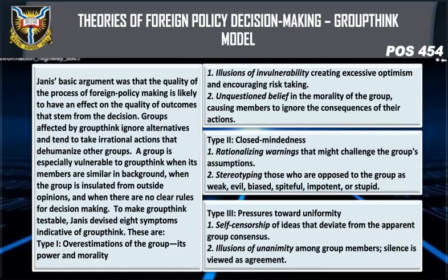Groups tend to take irrational actions that dehumanize other groups. A group is especially vulnerable to groupthink when its members are similar in background, when the group is insulated from outside opinions, and when there are no clear rules for decision-making. To make groupthink testable, Janis devised eight symptoms indicative of groupthink.